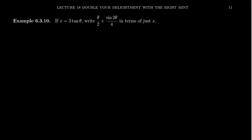In this video, I want to show you how you can transform a trigonometric expression — theta over 2 plus sine 2 theta over 4 — into an algebraic expression just using the algebraic variable x, not the trigonometric variable theta. We're going to do this using the trigonometric substitution x equals 3 tangent of theta.